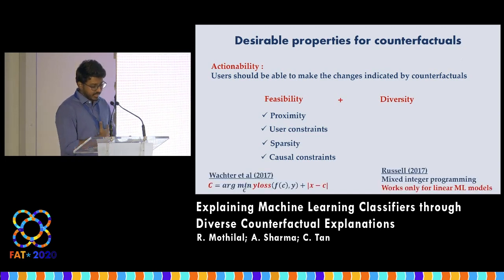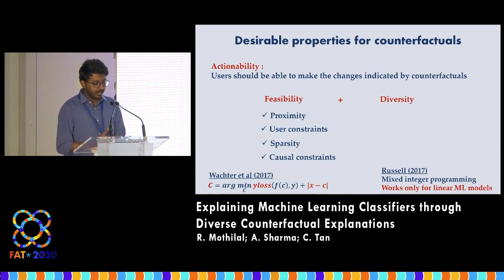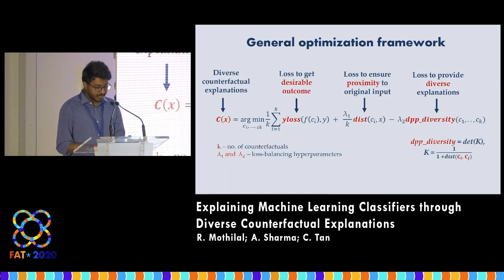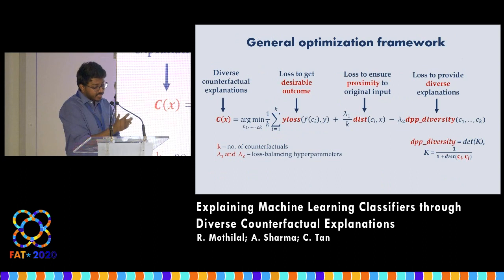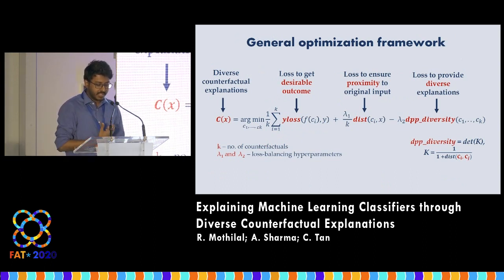There are two important related works in this line: the work by Wachter et al., which focuses only on proximity, and the work by Russell, which considers diversity but focuses only on explaining linear machine learning models. We propose a general optimization framework to generate actionable counterfactuals where the different parts of our objective function take care of different desirable properties. To generate k-diverse counterfactuals, we use a determinantal point processes based method and generate all counterfactuals at once, in contrast to prior work.